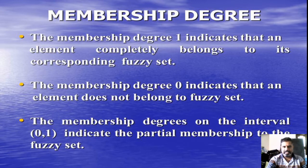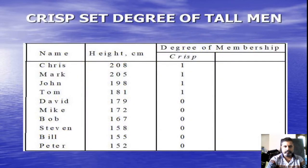The membership degree 0 indicates that an element does not belong to Fuzzy Set. The membership degrees on the interval (0,1) indicate the partial membership to the Fuzzy Set. This is the values represented here.